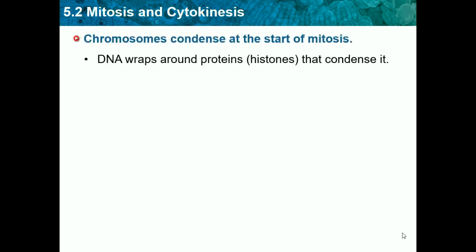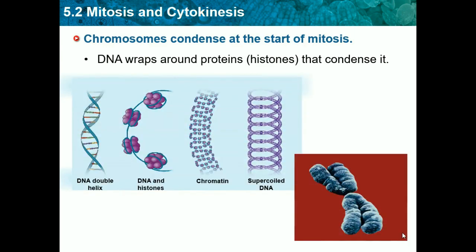Chromosomes condense at the start of mitosis. Chromosomes are strands of DNA which are in the nucleus of a cell, and each animal has different amounts of chromosomes in each cell. Every cell contains chromosomes — it's the DNA or instructions that tell it what to do. The DNA wraps around proteins called histones and condenses. The double helix wraps around these proteins to become chromatin, then gets super-coiled and ends up looking like an X shape — that's how you know in a picture that it's condensed.